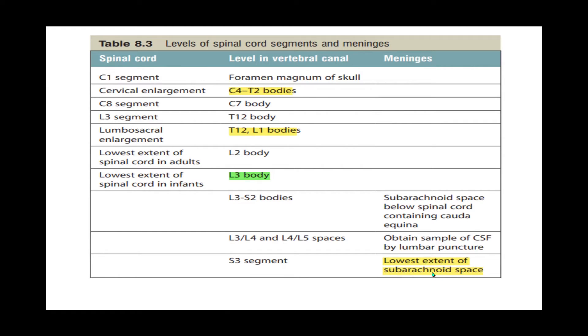Just to recap, the subarachnoid space is the space that lies between the arachnoid matter and the pia matter, which we mentioned in a previous video when we looked at the ventricular system of the brain.